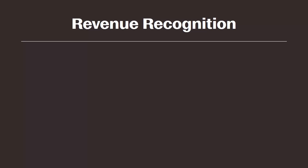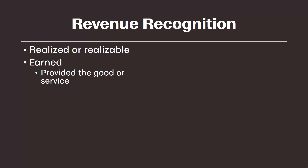Revenue can be recorded when it is realized or realizable. That means we have to either have received cash already or anticipate receiving cash in the future. The second criteria for recording revenue is that it is earned, which simply means the good or service has been provided to the customer.